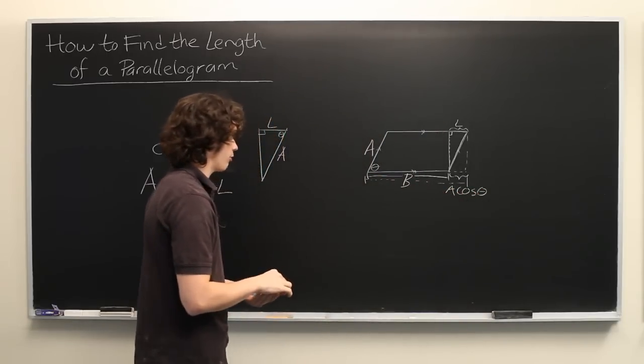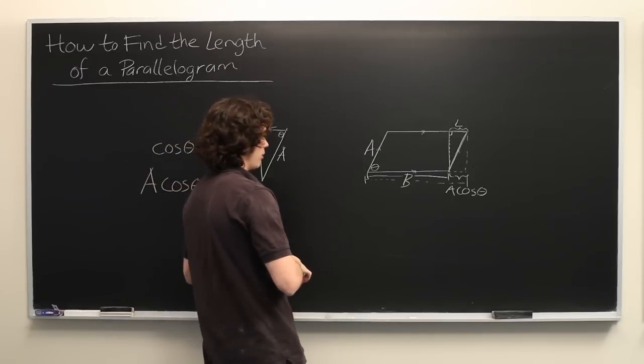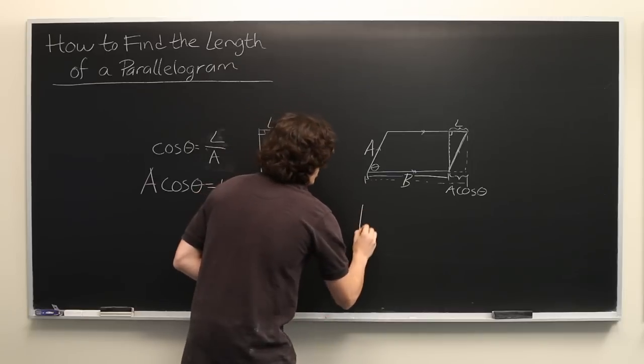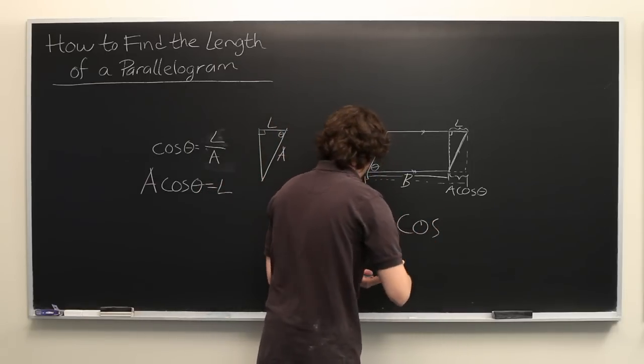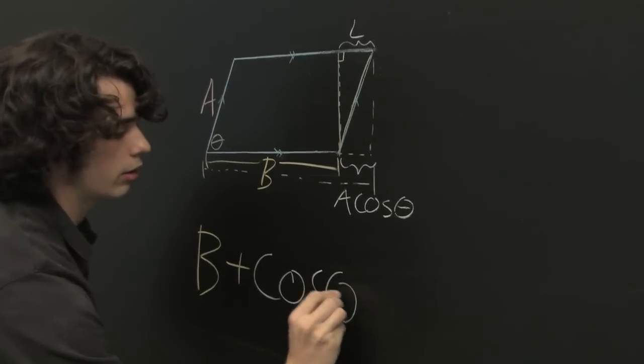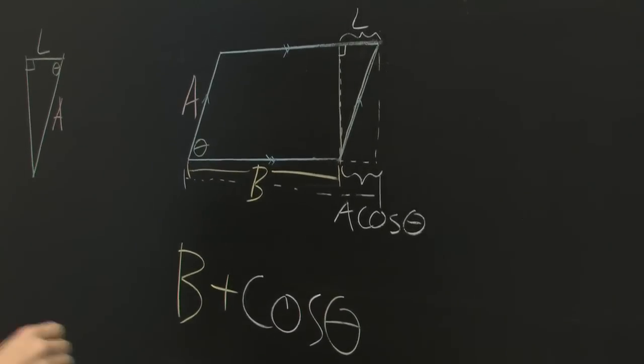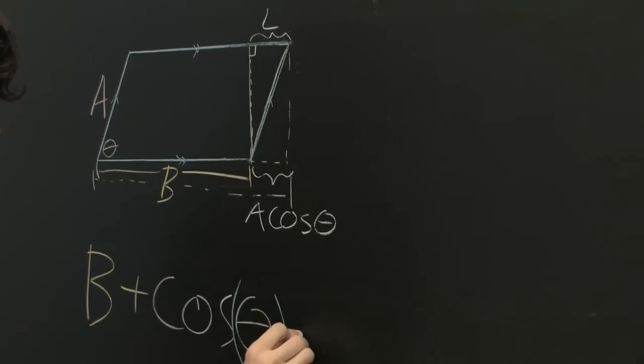Well, then the length of the entire parallelogram can simply be written as b plus the cosine of theta times a.